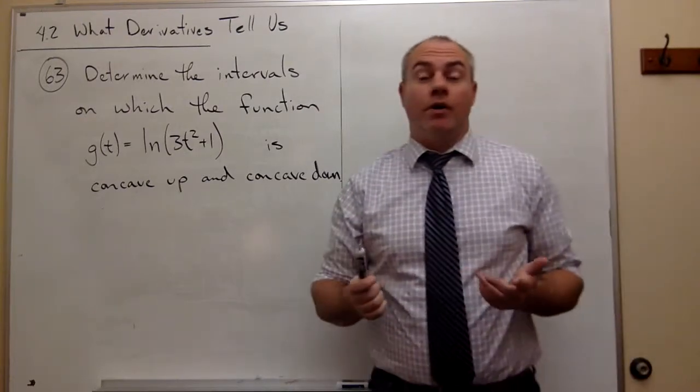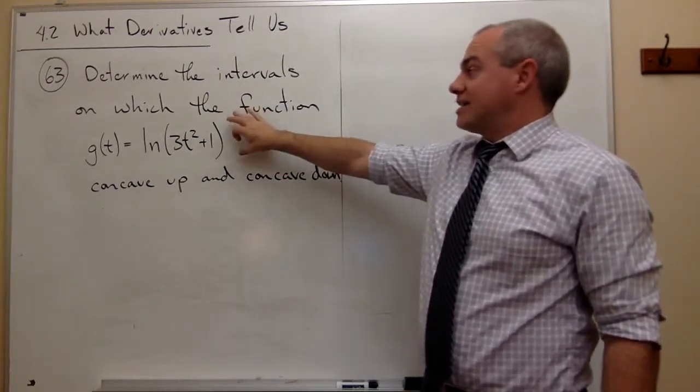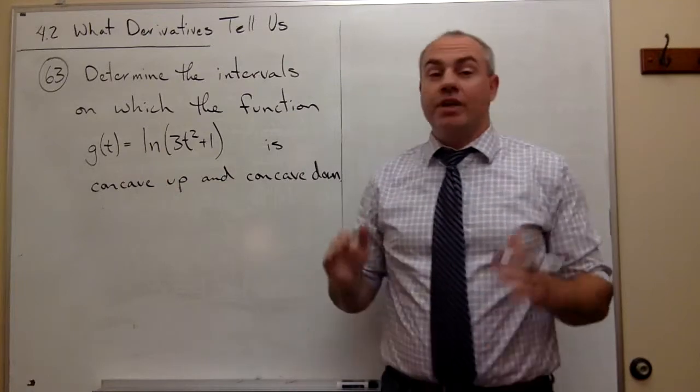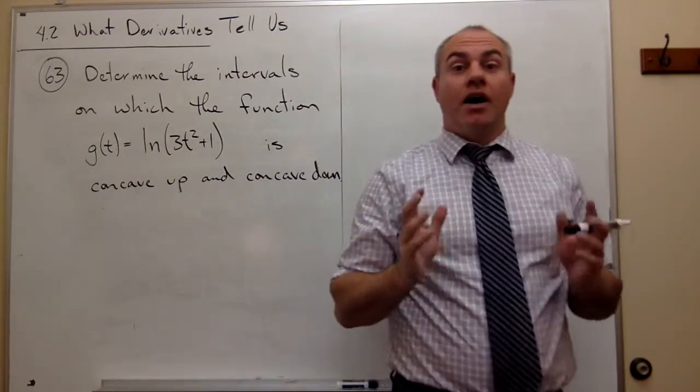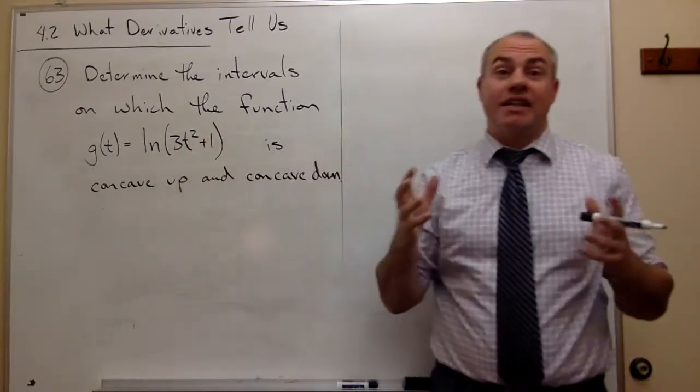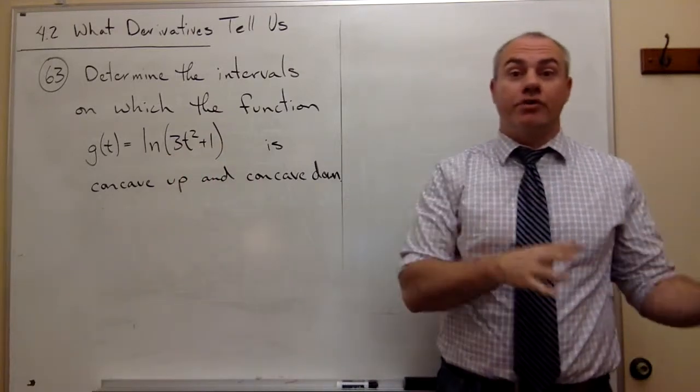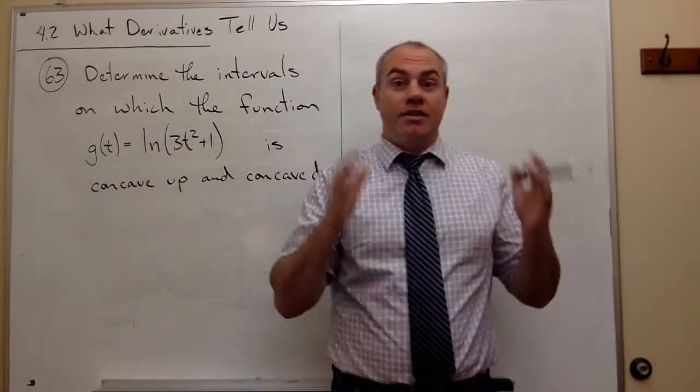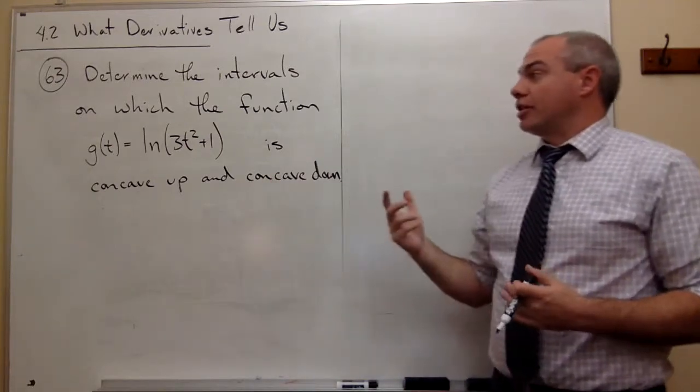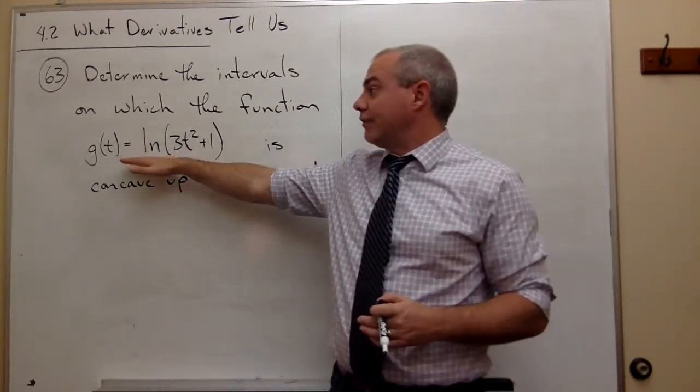So we know what we need to do here. We need to find a second derivative of this function. We need to find all second-order critical values of this function by setting that second derivative equal to 0, solving for t in this case, put those numbers on a number line, test some intervals, and then we will see where this thing is concave up and concave down. But the very first thing we need to do is we need to take a second derivative of the function.